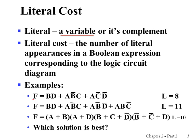Literal cost is most straightforward. For a given function F, the literal cost is simply the number of literal appearances — counting gives 11. We don't care about the complexity of the expression; we simply count the number of literal appearances. Very straightforward.